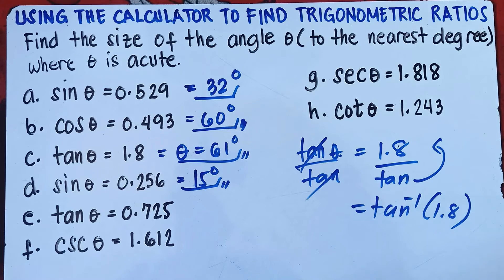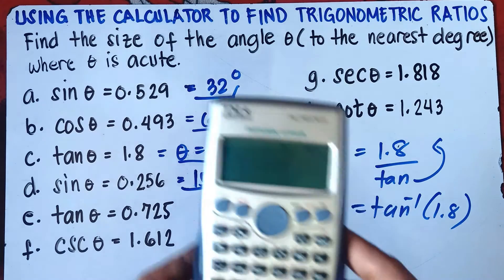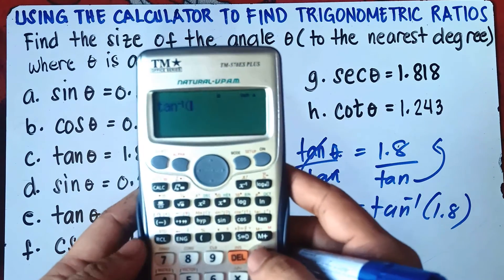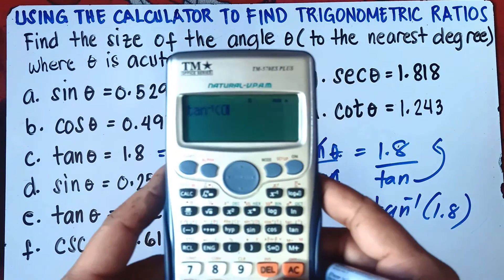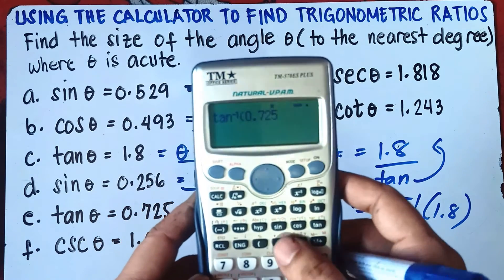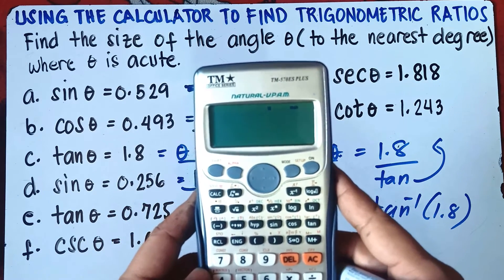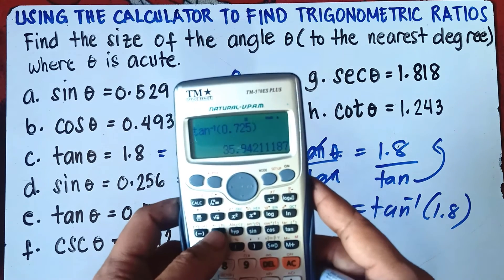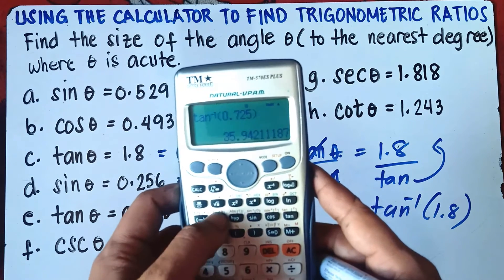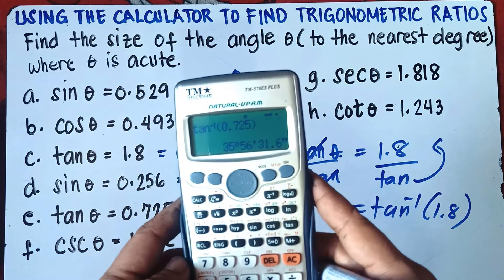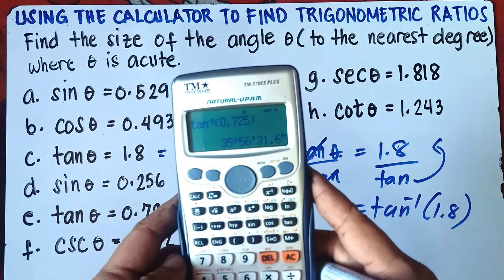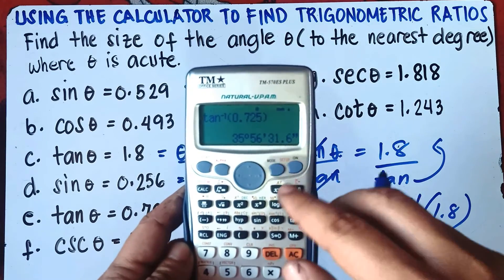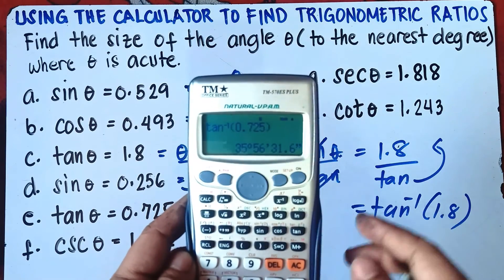Letter E: tangent theta equals 0.725. Press shift tan, enter 0.725, close parenthesis, equal sign — this gives 35.94. Press the degree-minute-second symbol: 35 degrees, 56 minutes, 31.6 seconds. Since 56 minutes is greater than 30, we round up — 35 becomes 36 degrees.